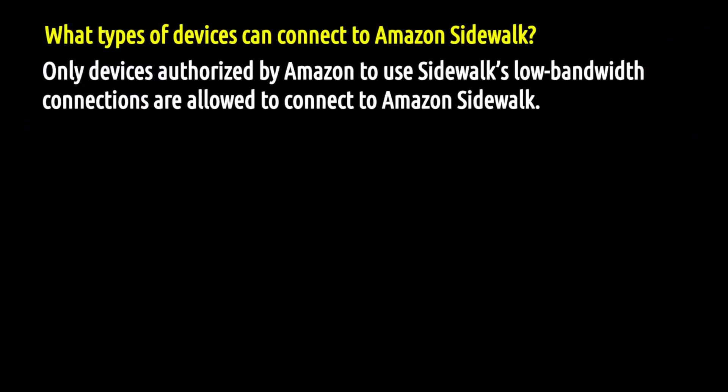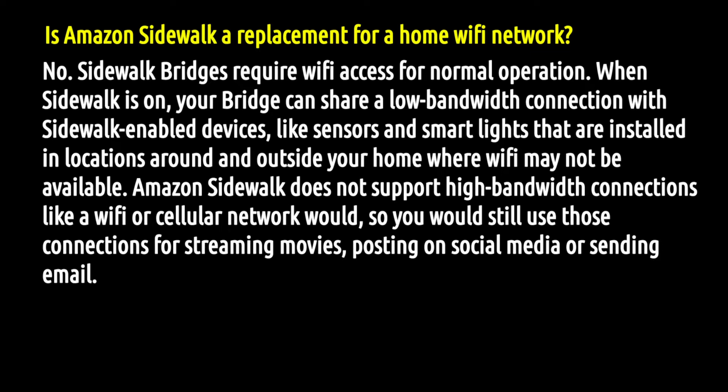The next question is: what types of devices can connect to Amazon Sidewalk? Only devices authorized by Amazon to use the Sidewalk low-bandwidth connections are allowed to connect. Amazon is keeping a tight control over which devices can connect — currently their own devices. Other third-party devices may be allowed in the future, but they're keeping a tight lid on it to prevent hackers from manipulating the network or stealing information. That's why only authorized devices are permitted.